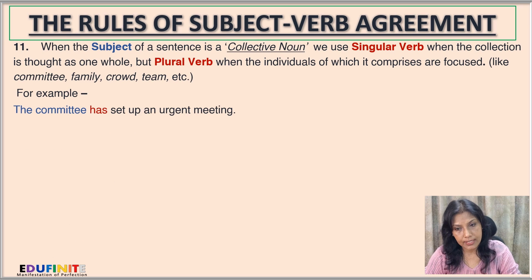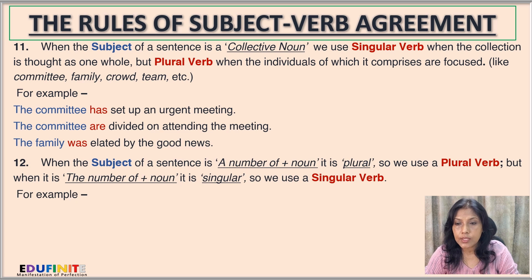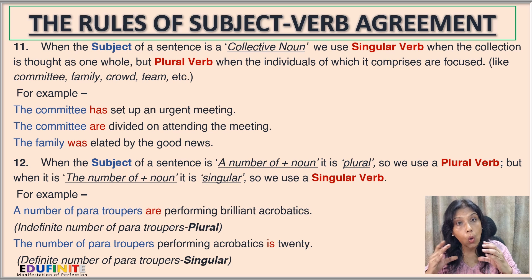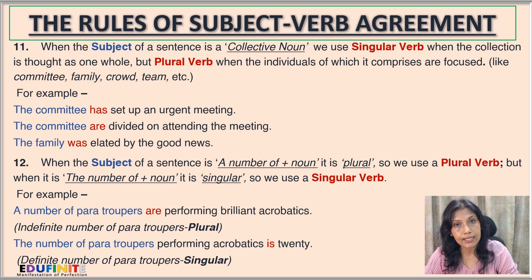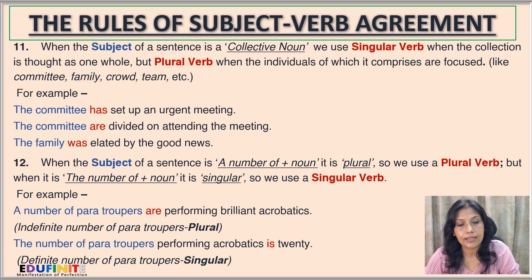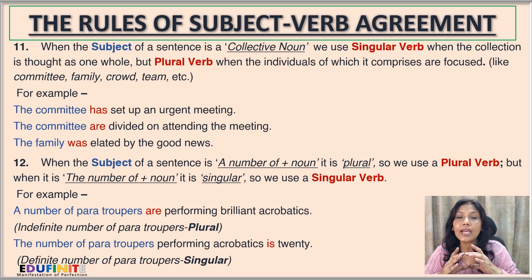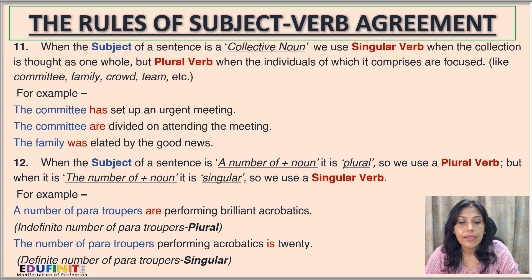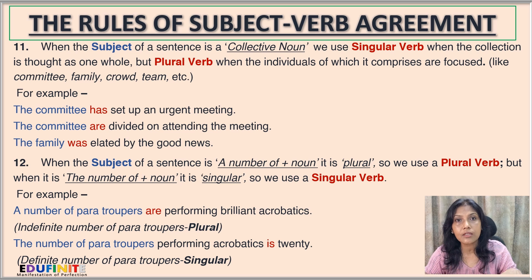Rule number eleven: when the subject of a sentence is a collective noun — like committee, family, crowd, team — we use a singular verb when the collection is thought of as one whole, but a plural verb when the individuals comprising it are focused upon. 'The committee has set up an urgent meeting' — committee as a whole unit, so we use 'has'. But: 'The committee are divided on attending the meeting' — here committee represents its individual members, so we use the plural verb 'are'.